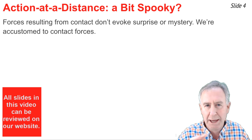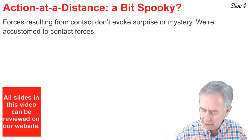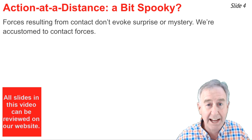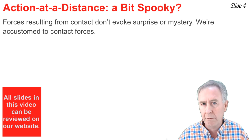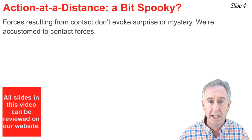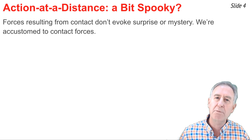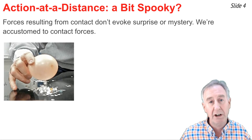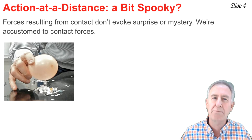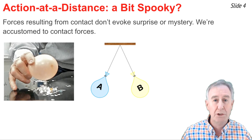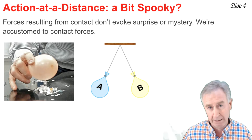But if you reached out to catch that baseball, and while it was still five feet away it started to slow down and eventually stopped without ever making contact with your hand, that action at a distance would evoke mystery. Or if the fullback got knocked over backwards before the linebacker actually made contact — now that would be mystery. In physics class, we see this kind of surprise with a charged balloon picking up paper bits from the table, or two charged balloons hanging from the ceiling and repelling one another.